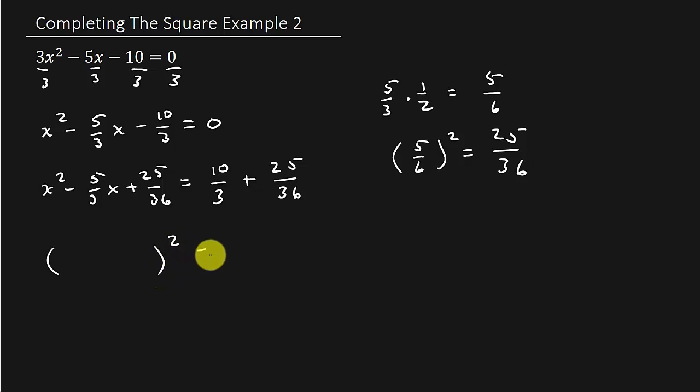The left-hand side becomes a perfect square trinomial. And that's going to factor into a set of parentheses squared. Let me show you the easiest way to factor this. Works every time. Look at the first term and the last term. What's the square root of the first term? x. What's the square root of the last term? 5 over 6. How easy is that?